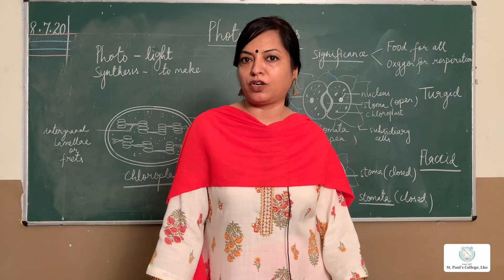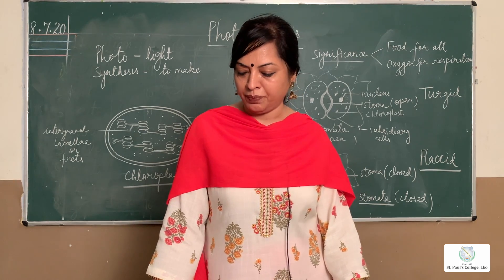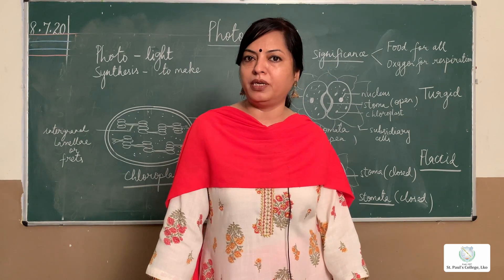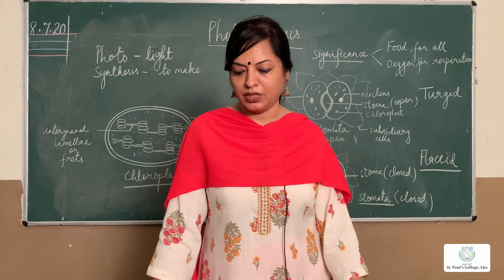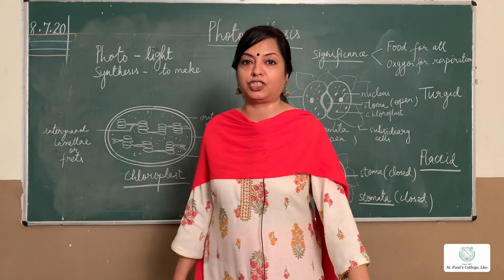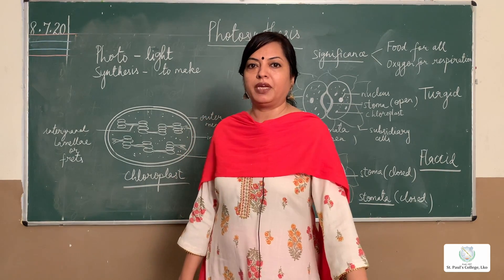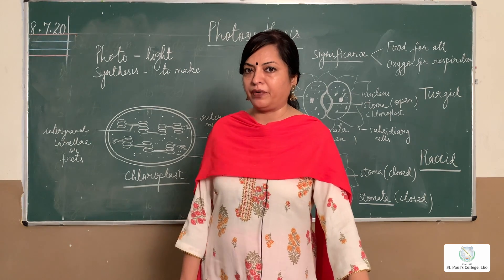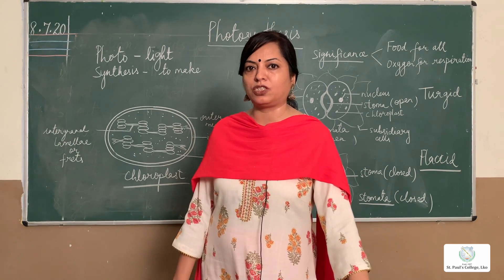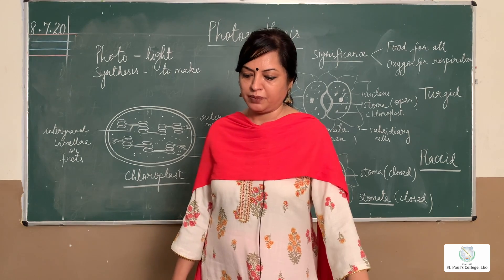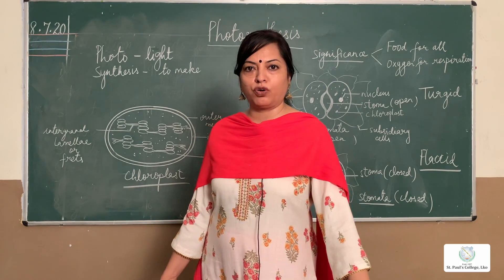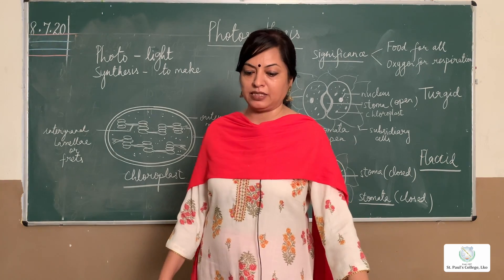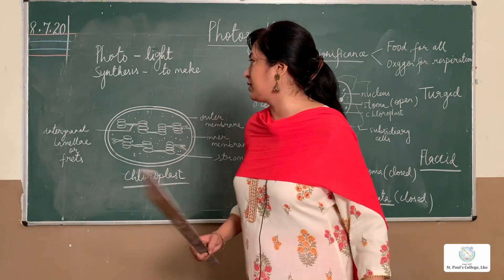Chemically, chlorophyll is composed of carbon, hydrogen, oxygen, nitrogen, and magnesium. Magnesium is the main metallic component here. Chlorophyll has a porphyrin ring, and in the center of the ring magnesium is present. Now this chlorophyll pigment is present inside a very important plastid called the chloroplast.